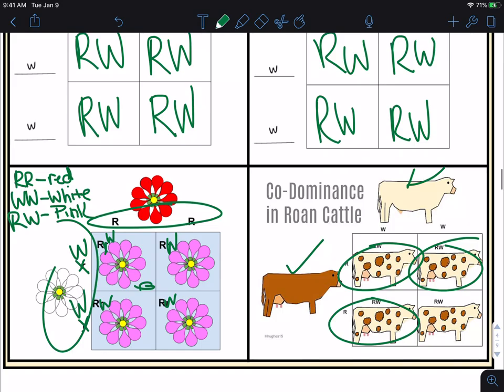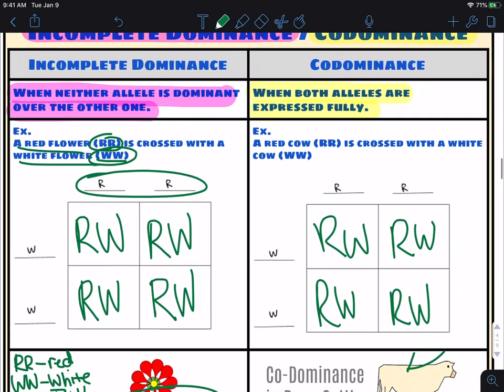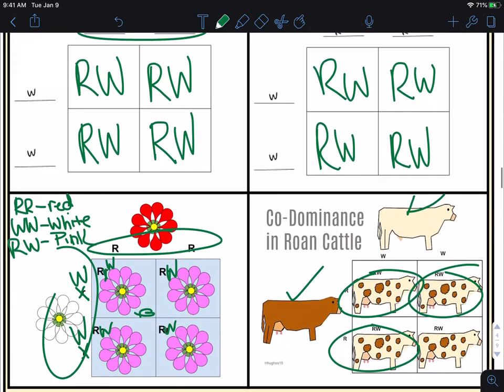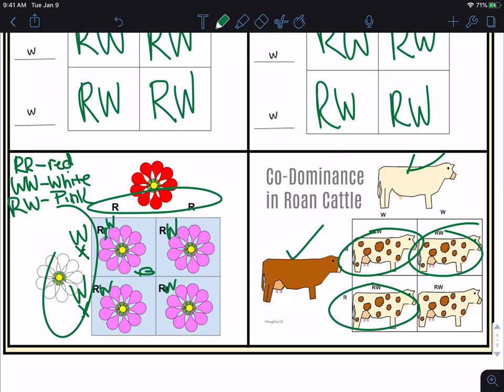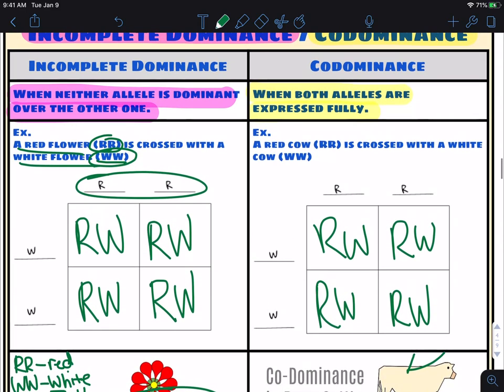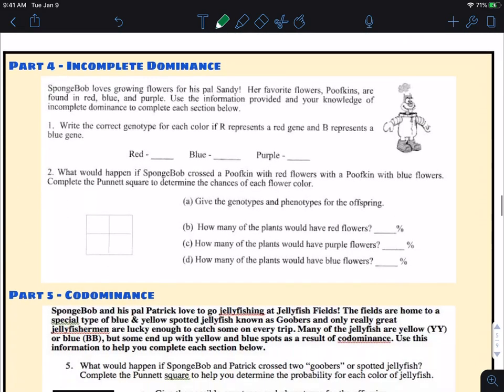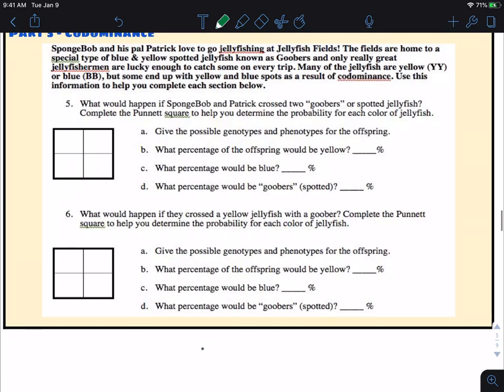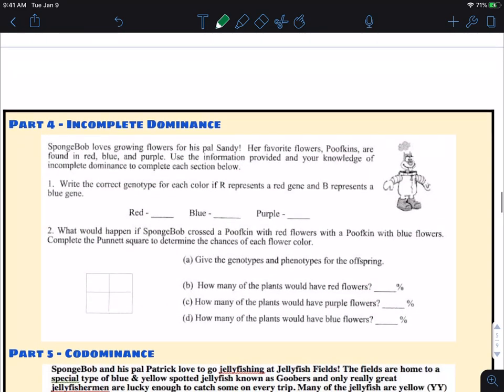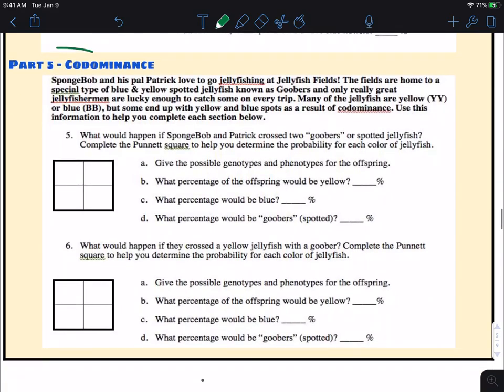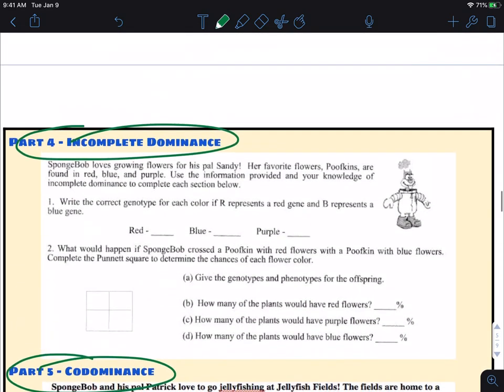So do your best with this. Remember, if you're confused, go back up here and watch. Incomplete dominance isn't one dominating over the other. It's when they both kind of are expressed together. Same thing with codominance. We just end up with spotted or things like stripes. You can very clearly see that I have these labeled, so part four is going to be incomplete. Part five is going to be codominance.